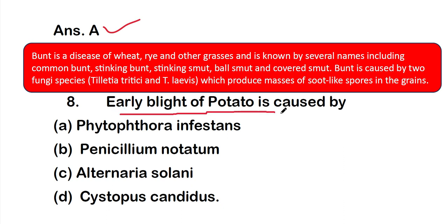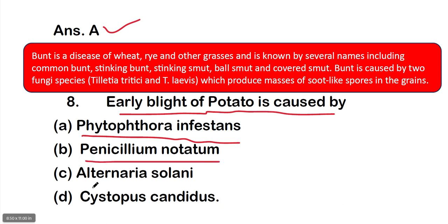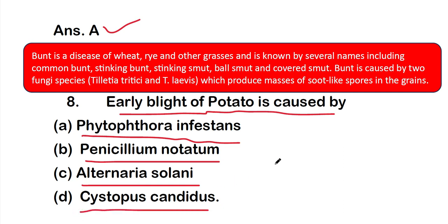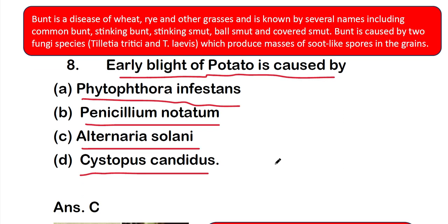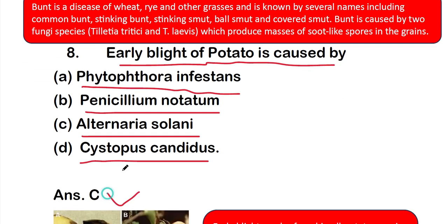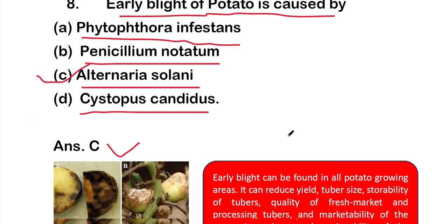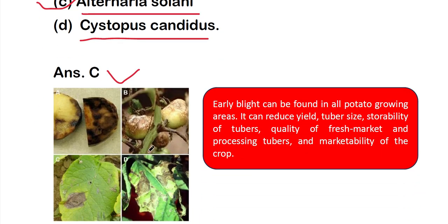Question 8: early blight of potato is caused by — option A: Phytophthora infestans, option B: Penicillium notatum, option C: Alternaria solani, or option D: Cystopus candida. The right answer is option C, Alternaria solani. Early blight of potato is caused by Alternaria solani.